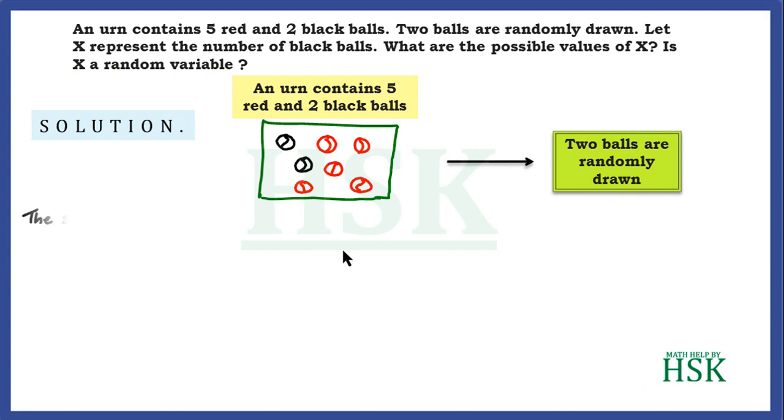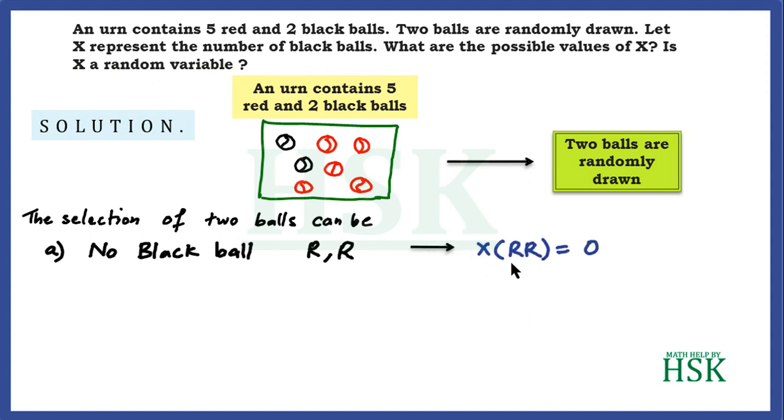Now the selection of the balls can be made in following ways. In first case, we have made a selection in which there is no black ball. That is, both the balls are red. So in this case, the value of the random variable when both the balls are red would be equal to zero because none of the black balls is selected.